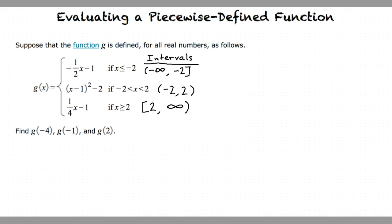In this problem we are asked to find the values of this function at three different x values: negative 4, negative 1, and 2.